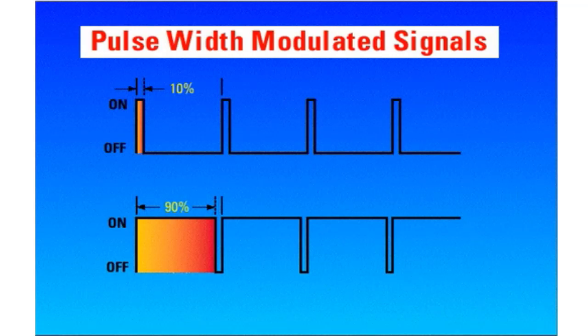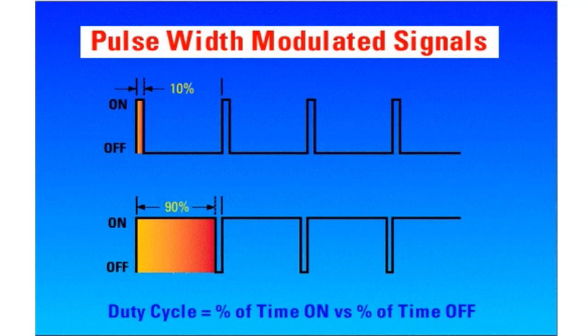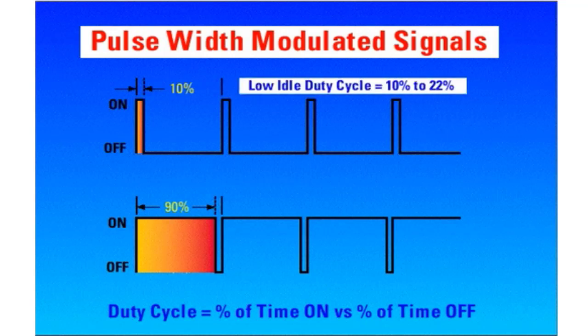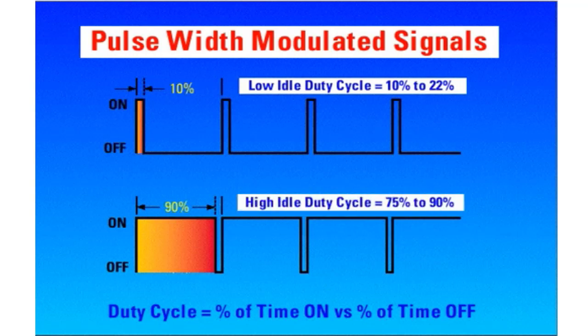Duty cycle is the percent of on time. The duty cycle for the low idle accelerator pedal position is between 10 and 22 percent. At the high idle accelerator pedal position, duty cycle is 75 to 90 percent. The accelerator pedal position sensor transmits this duty cycle signal to the ECM at a constant frequency.